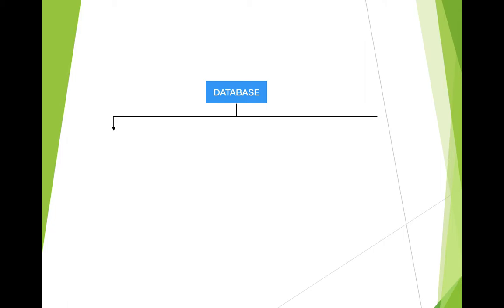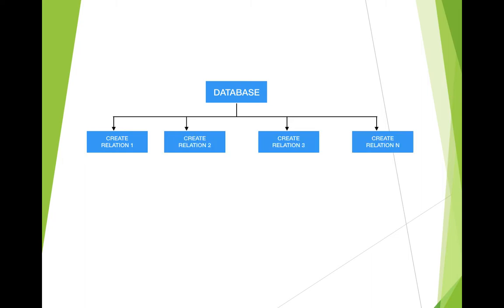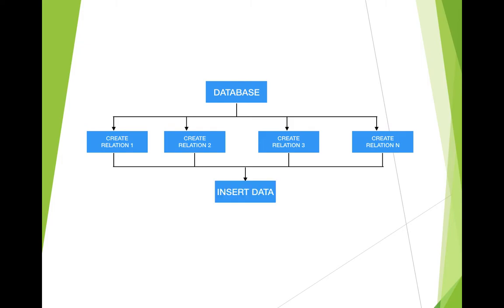Within a database you can have various tables. The first step is creating the database. Then after that we are going to create the tables one by one. Within a database there may be one table or more than one table. Creating the tables is our second step of MySQL. After that we will insert values into the tables — that is the third step. After inserting the data we will learn how to view the relations, meaning how to view the contents of the table.